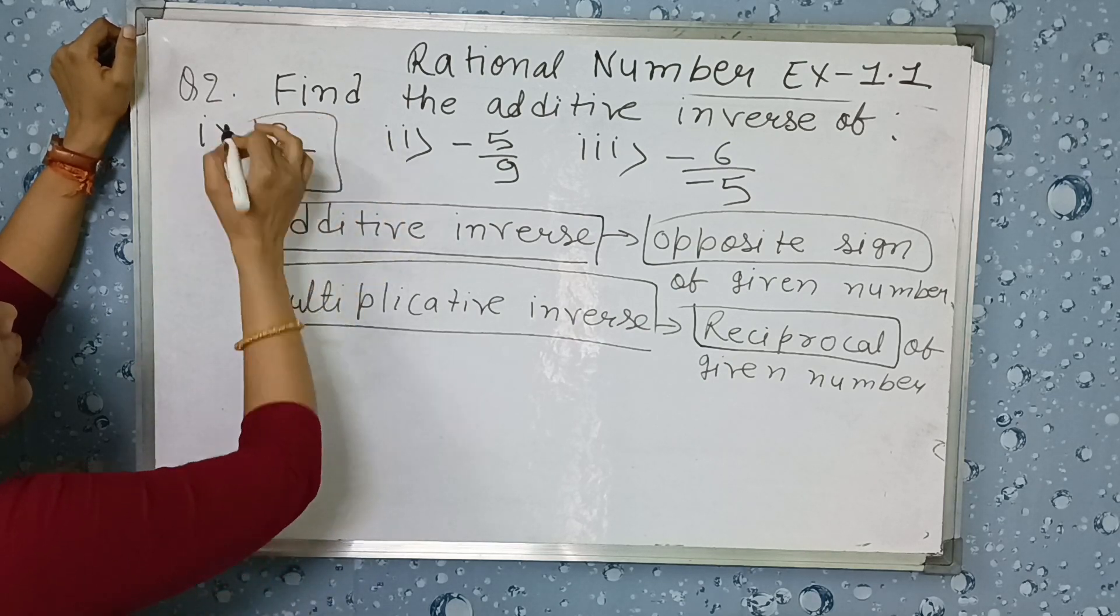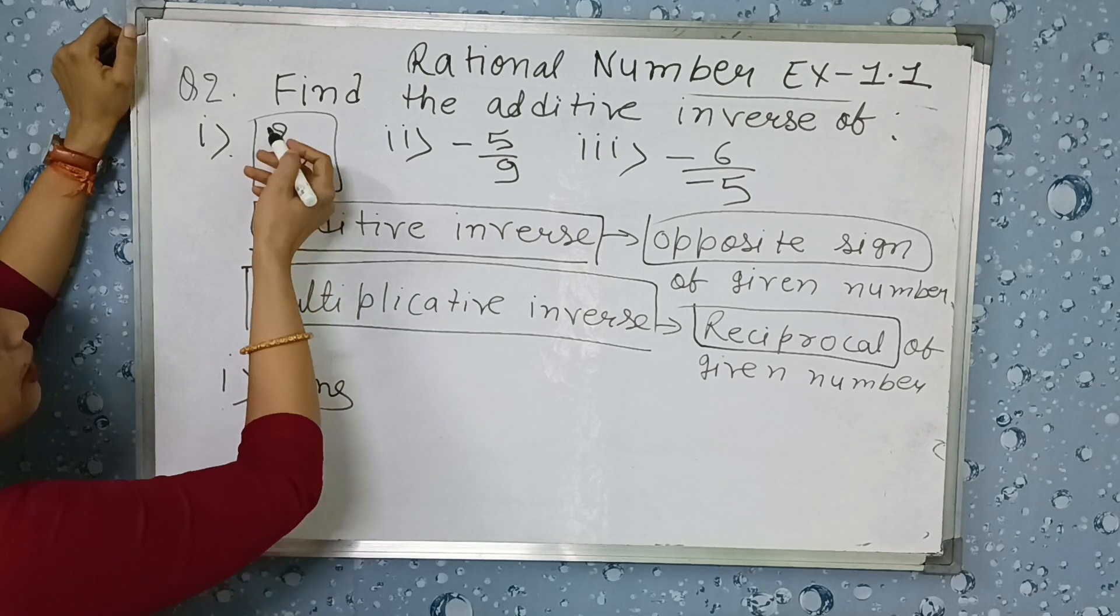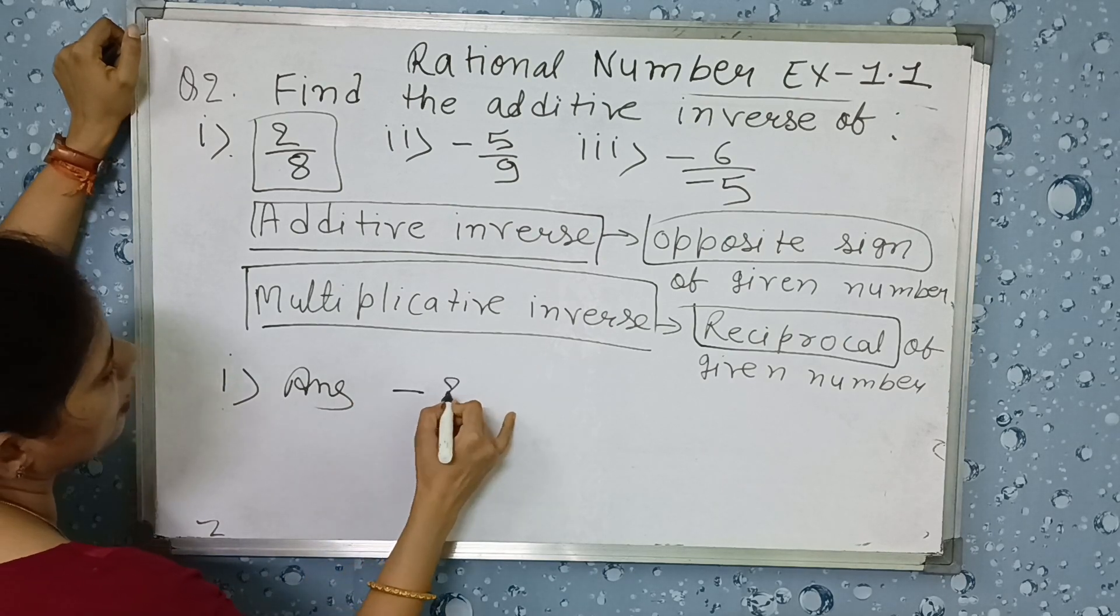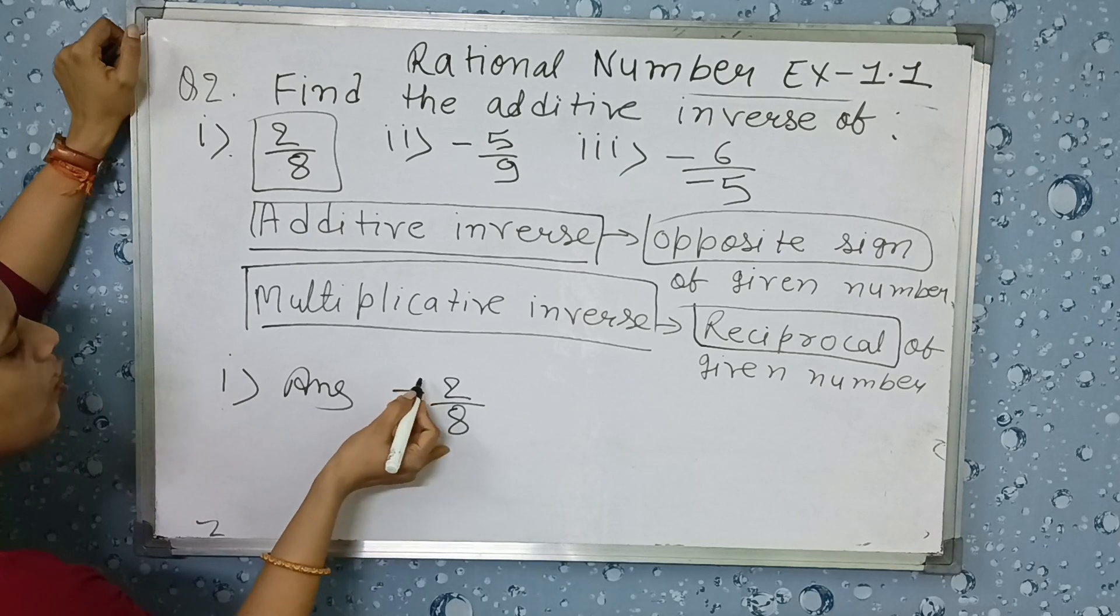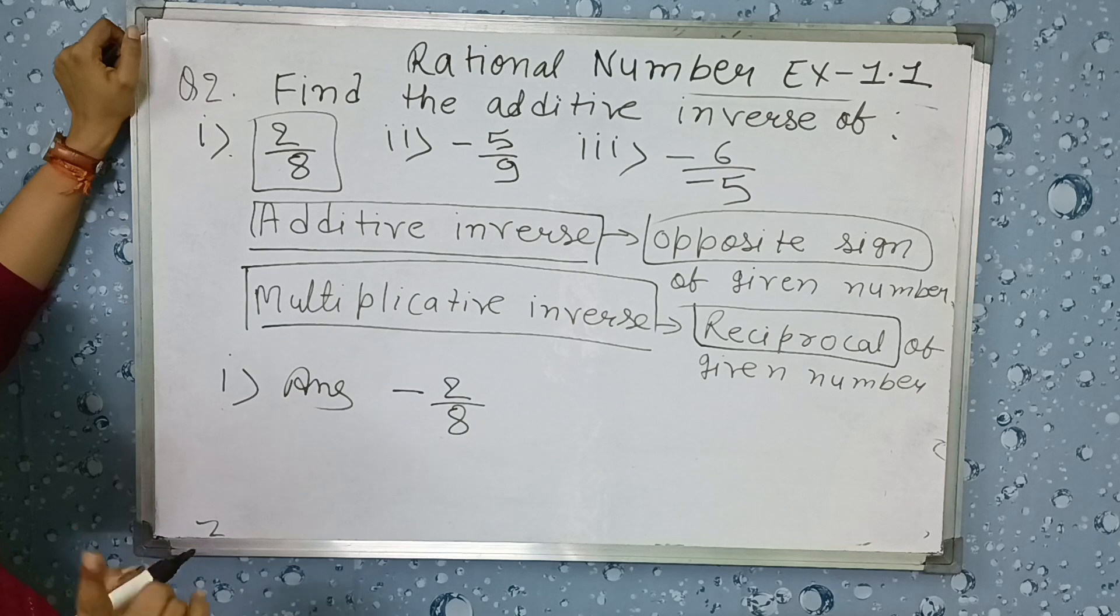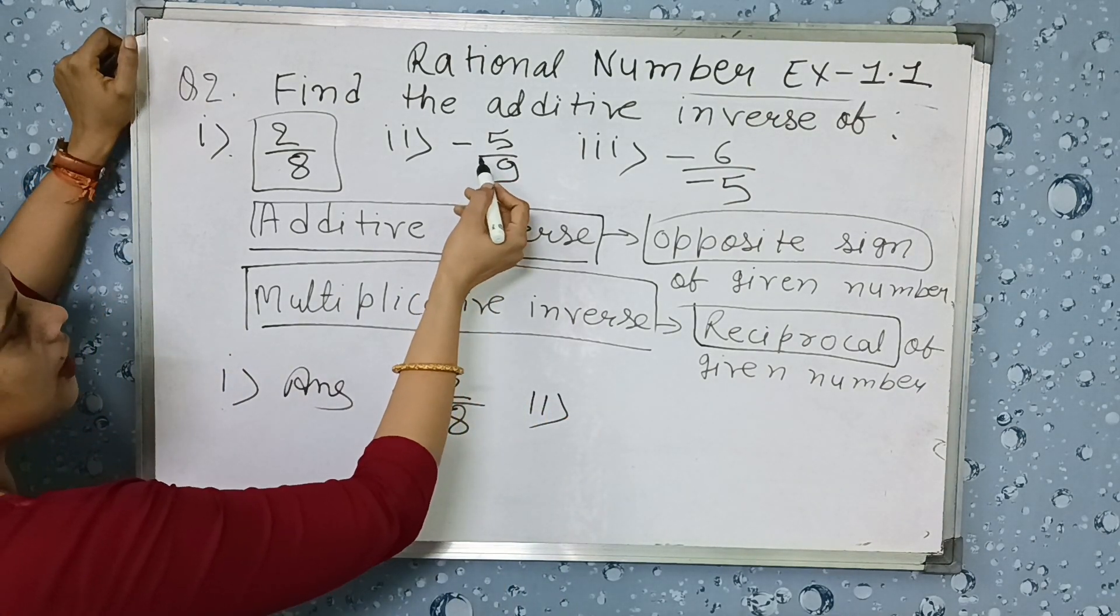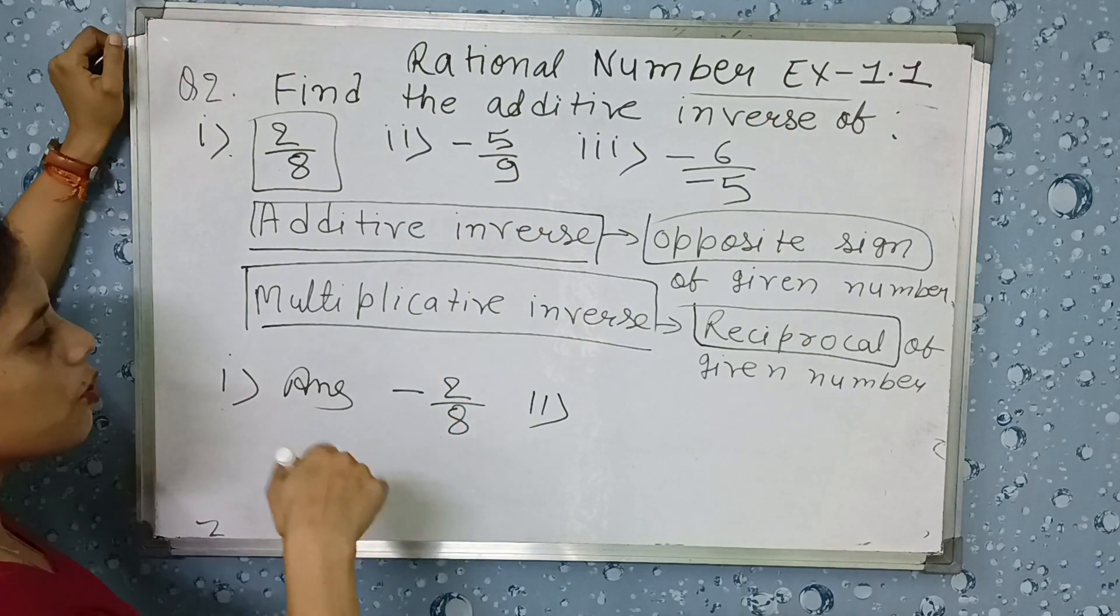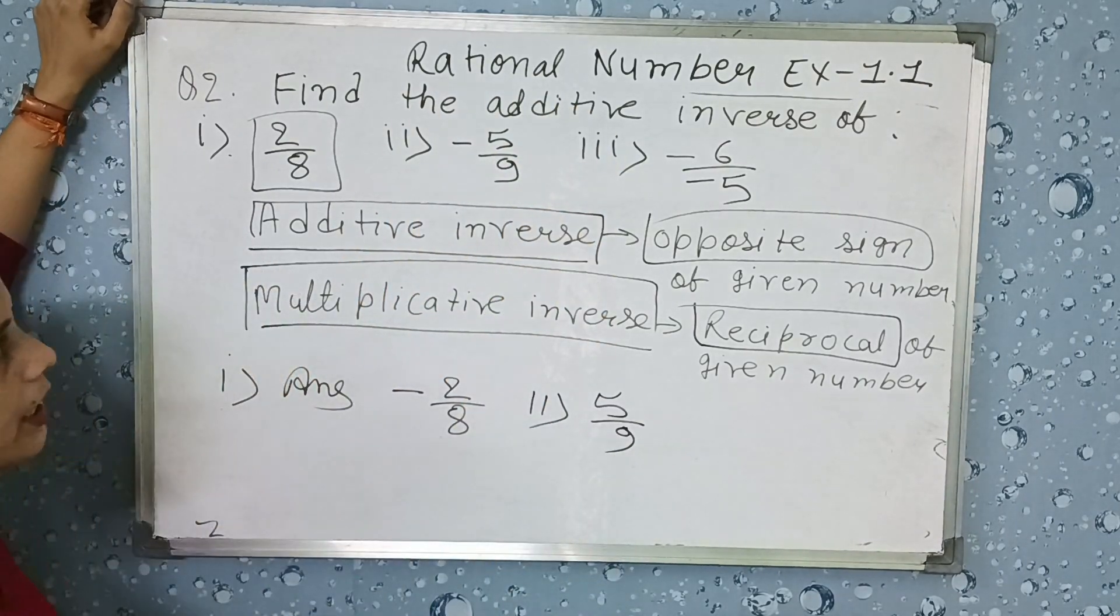Now find the additive inverse. It is a positive number because both numerator and denominator are positive, so the answer will be minus 2 by 8. You can apply minus either on denominator side or numerator side, but only one minus, not both sides. In the second one, what will be the additive inverse? This is negative rational number, so it becomes positive rational. The answer will be 5 by 9.